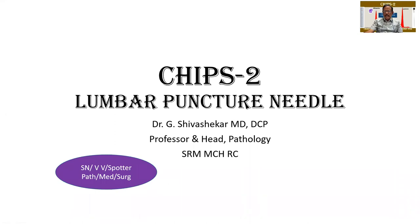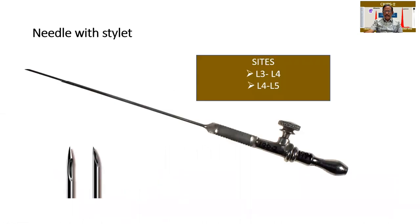This can be part of the theory as well as viva. CSF is an important question for which this shall be forming part of the answer. There is always a needle and a stillet — a needle and within it there will be an adjustable stillet. This will be removed and then you find that the fluid starts dropping.